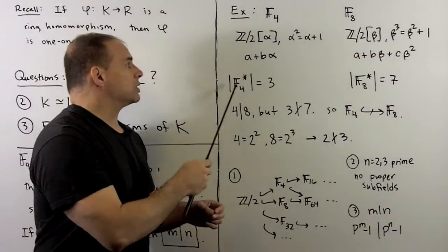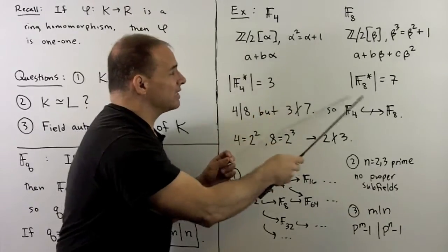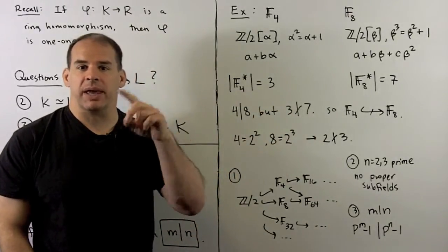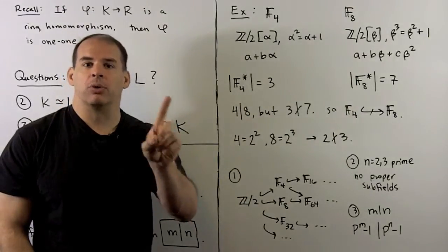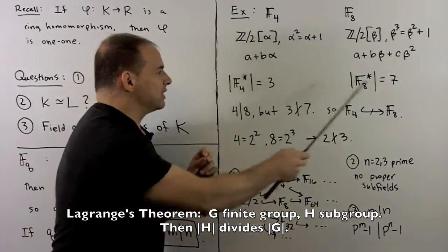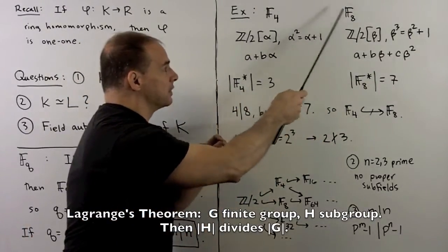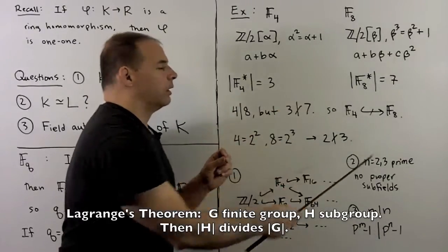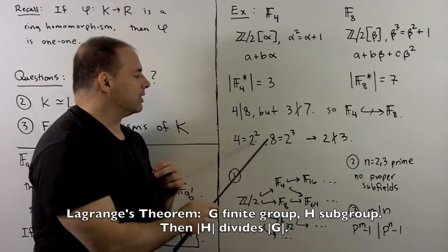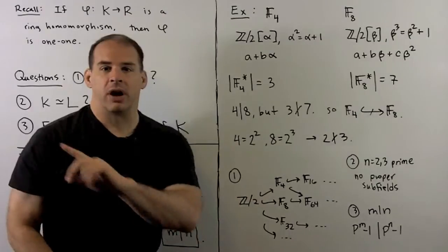Now, note, we take the groups of units. For F_4, we get three elements. For F_8, we get seven elements. So if F_4 was a subfield of F_8, we would have an inclusion of subgroups at the level of units, but I don't have that three divides seven. So F_4 can't be a subfield of F_8. Now, just to verify, note that 4 is equal to 2 squared, 8 is 2 cubed, and I have that 2 does not divide 3. So that verifies this result.